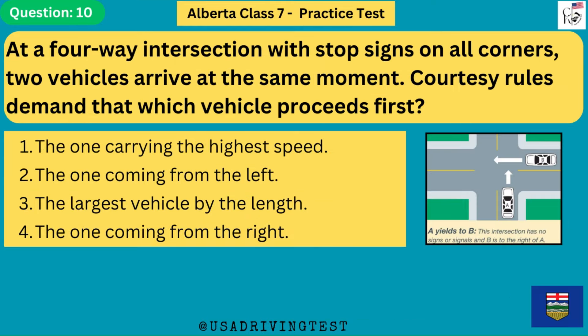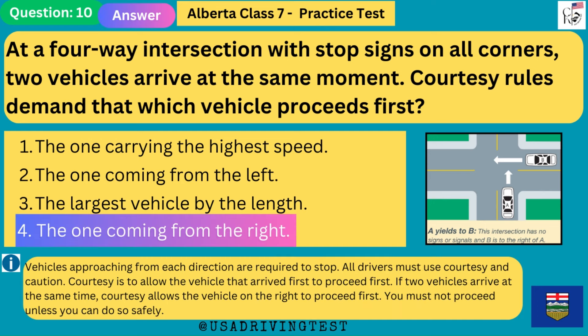At a four-way intersection with stop signs on all corners, two vehicles arrive at the same moment. Courtesy rules demand that which vehicle proceeds first? 1. The one carrying the highest speed. 2. The one coming from the left. 3. The largest vehicle by length. 4. The one coming from the right. The answer is 4: the one coming from the right. All drivers must use courtesy and caution. If two vehicles arrive at the same time, courtesy allows the vehicle on the right to proceed first. You must not proceed unless you can do so safely.